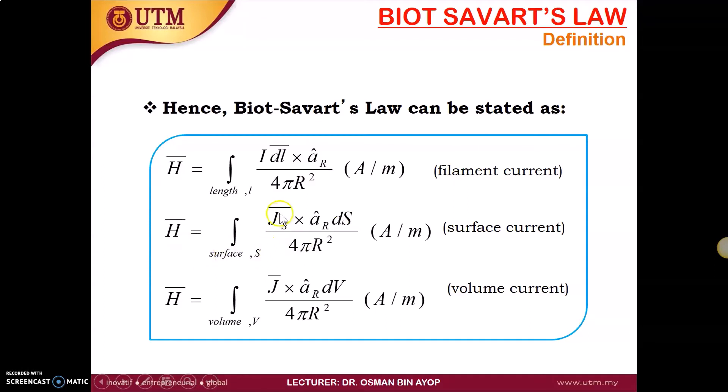The unit is ampere per meter for filamentary current. For the surface current, we have the current element K dS, and then we cross product with the unit vector AR, and the same thing, 4 pi R squared. And also for volume current, we have J dV cross product with AR divided by 4 pi R squared.